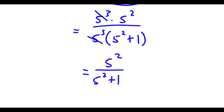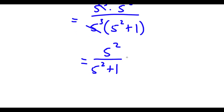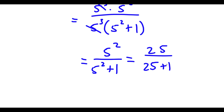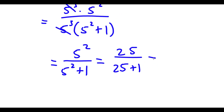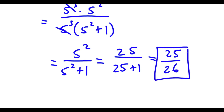Now, 5 to the power of 2 is equal to 25, over 5 to the power of 2 plus 1, which is 25 plus 1. 25 plus 1 is 26, so I have 25 over 26. And this is my answer.